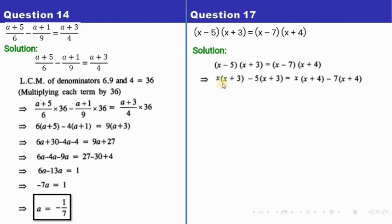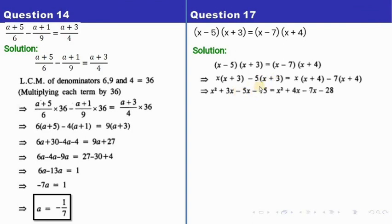Now we open the brackets by multiplying through. So x times x is x², x times 3 is 3x. Since we have minus 5 outside, the signs inside flip: minus 5 times x is minus 5x, minus 5 times 3 is minus 15. Similarly, x times x is x², x times 4 is 4x, with the plus sign outside so signs remain. Then minus 7 outside: minus 7 times x is minus 7x, and minus 7 times 4 is minus 28.